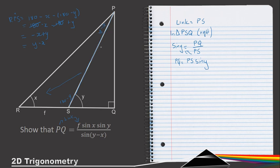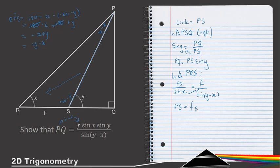This angle is y - x. Applying the sine rule in triangle PRS: PS / sin(x) = f / sin(y - x). Isolating the link PS gives PS = f·sin(x) / sin(y - x).